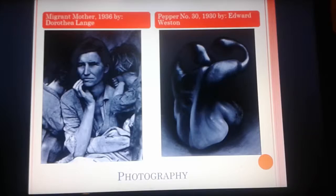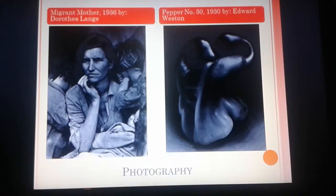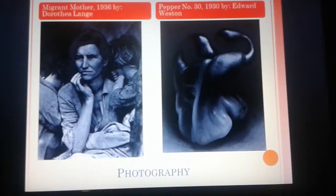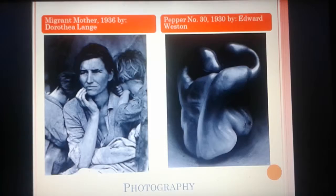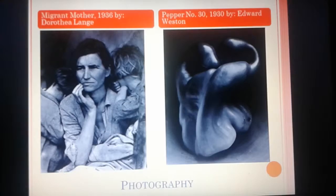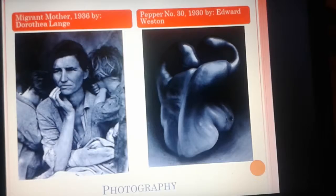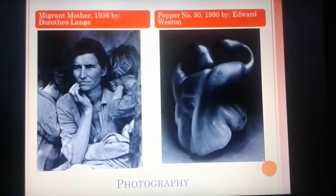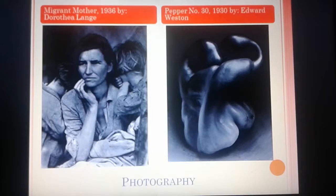Now moving into photography. I have The Migrant Mother, taken in 1936 by Dorothea Lange, and Pepper No. 30, made in 1930 by Edward Weston. Photography, I feel, is a form of art because it can capture a story, a feeling, or any kind of expression just as well as a drawing or painting. The Migrant Mother shows the struggles of a single mother during the Great Depression, a really rough time in American history. On the right, we have a basic photograph of just a pepper.